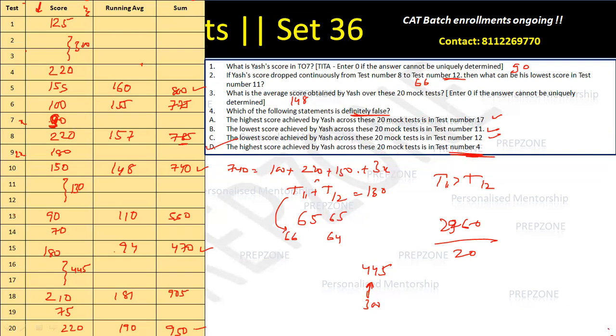But is D the highest score in test 4? Test 4 score is 220. Test 16 plus test 17 score was 445. 445 divided by 2 is 222.5, which means one test will have 222 or 223. If you reduce the score in one, the score in the other has to increase, which means either T16 or T17 will have a score greater than 223. This means T4, which is 220, cannot be the highest score, and hence option D is incorrect.